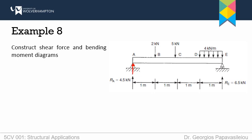So this is R_AY and this is R_AX, because I have a pinned support so I have two perpendicular forces as reactions. I also have R_EY which is vertical because the roller is vertical as well. Before I calculate the support reactions I need to calculate the resultant force of any UDL, and I also need to analyze any inclined load into two perpendicular components, one in the horizontal direction and one in the vertical direction.